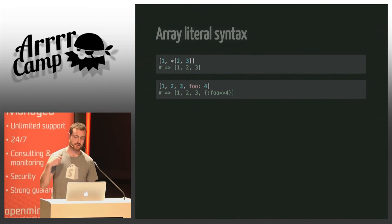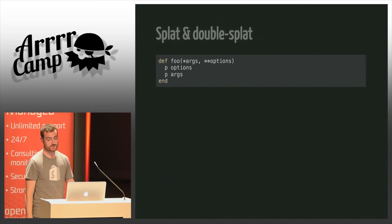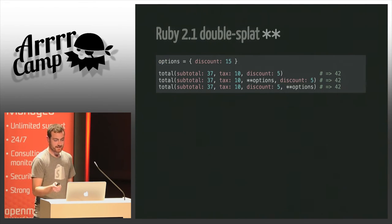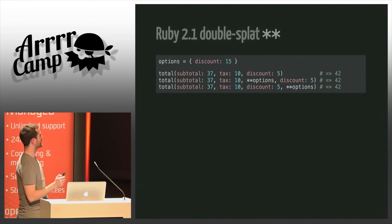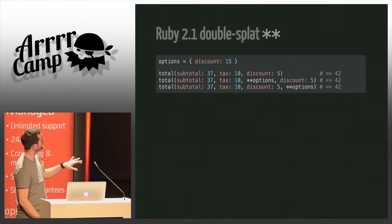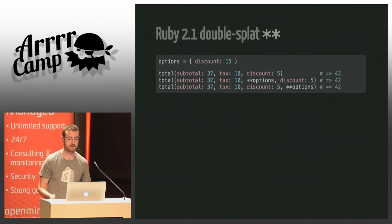Let's come back to the use case of having any number of arguments and an options hash — now with the double splat it's much easier. Just a quick note: the Ruby 2 double splat implementation was a bit weird in the sense that wherever you put the double splat it didn't matter in the end.